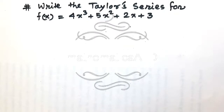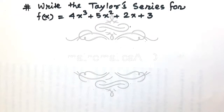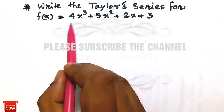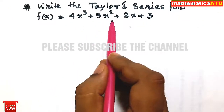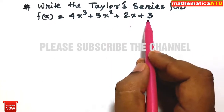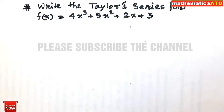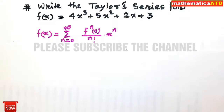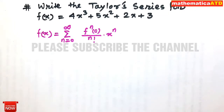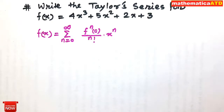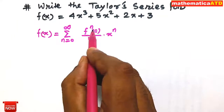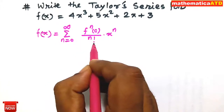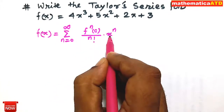Welcome back to the presentation. In this video, I would like to write the Taylor series for the function f(x) = 4x³ + 5x² + 2x + 3. The Taylor series gives us f(x) = Σ (n=0 to ∞) of f^(n)(0) divided by n! times x^n, where f^(n)(0) is the nth derivative of f(x) evaluated at x = 0.